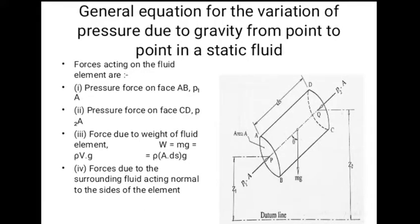The forces acting on the fluid element are: pressure force on face AB and CD given by the equations P1A and P2A, acting along the axis of the element and normal to face AB and CD respectively. Then the force due to weight of the fluid element W, which equals M times G, where M is given as Rho times V, and volume is given as area A times length of element Ds. So we get W equals Rho A Ds times G.